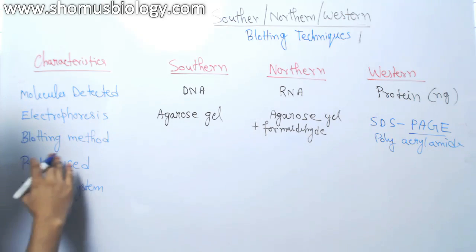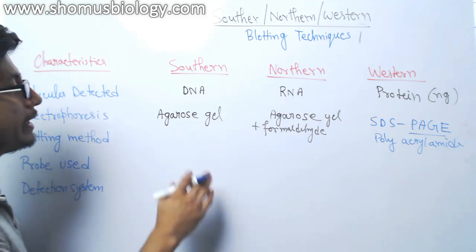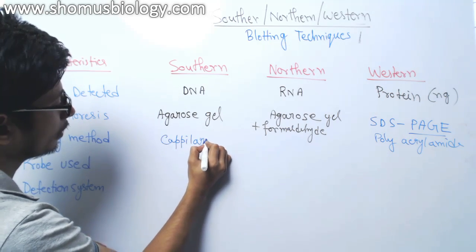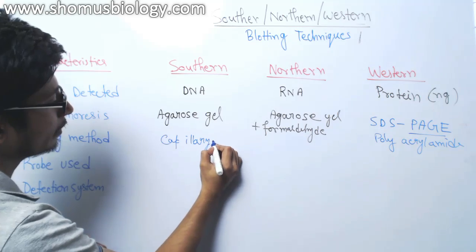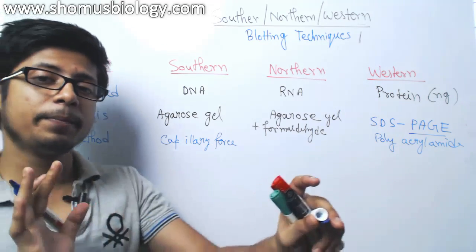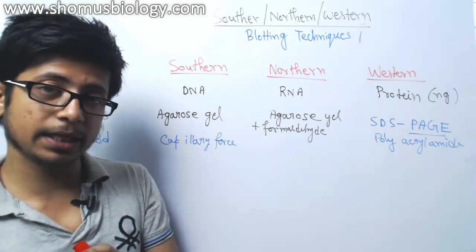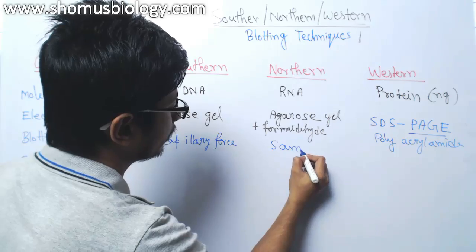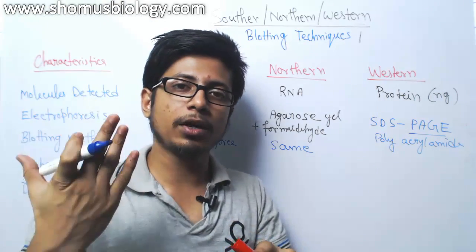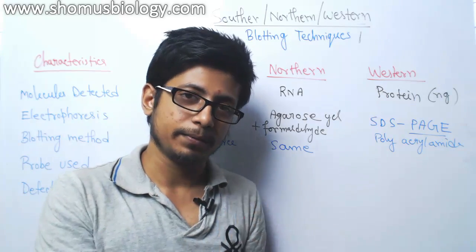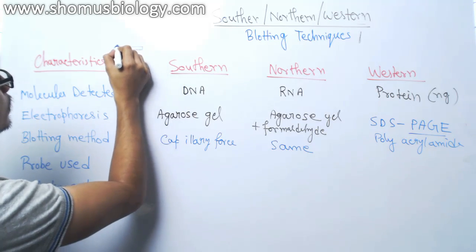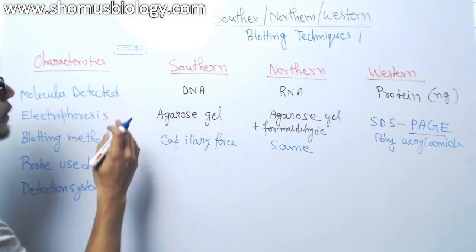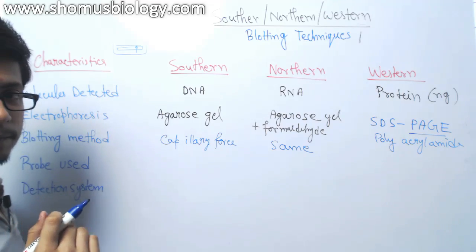The third characteristic is the blotting method used. In southern blotting, we use capillary force — the capillary method helps to transfer the DNA from the gel to the nitrocellulose membrane. In northern blotting, we also use capillary force for transferring the RNA content from the gel to the membrane. We place the gel at the bottom, then the membrane on top, and place them in buffer so that the buffer runs through the gel and up to the membrane.